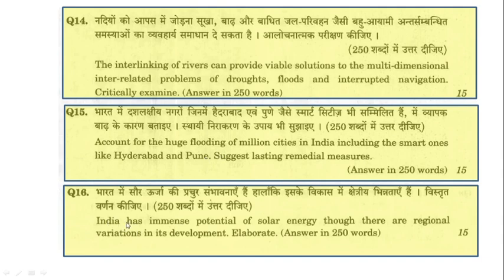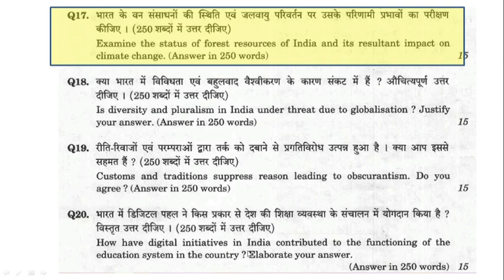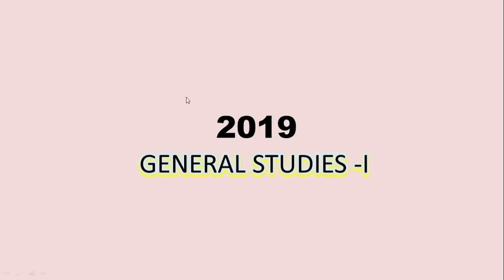Further 2020 GS1 questions on environment were: 'India has immense potential of solar energy, though there are regional variations in its development. Elaborate.' — reflecting natural resources as a continuous part of GS1. And, 'Examine the status of forest resources of India and its resultant impact on climate change.' — showing that the impact on geophysical phenomena is a key GS1 component.